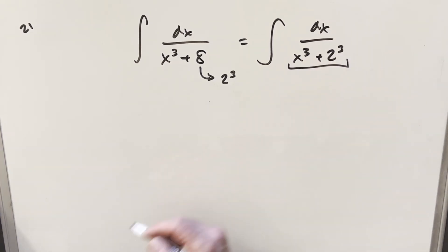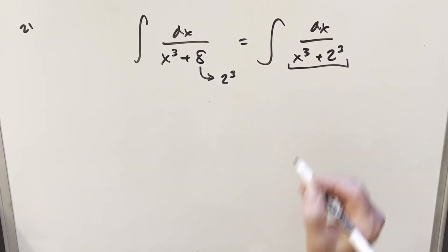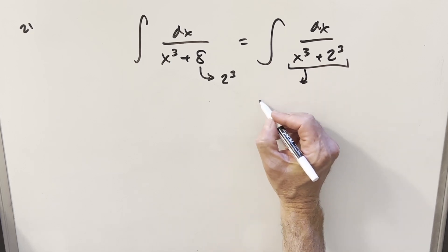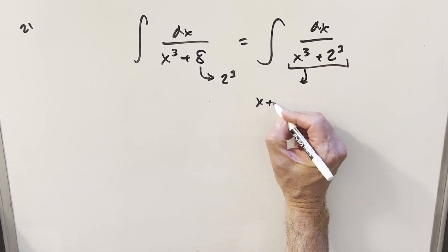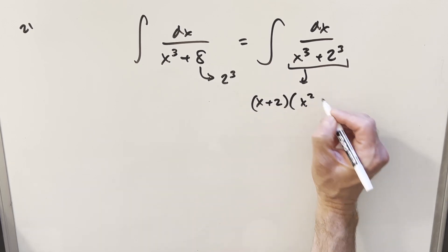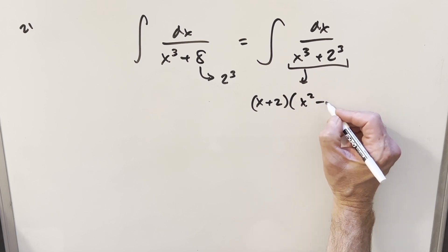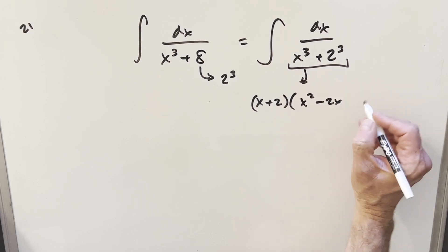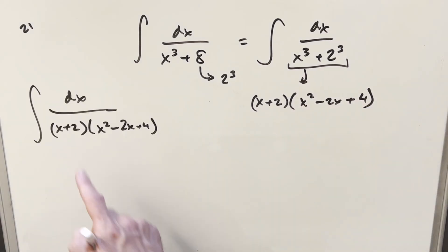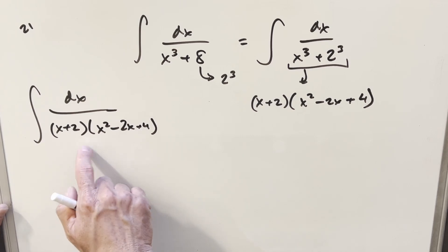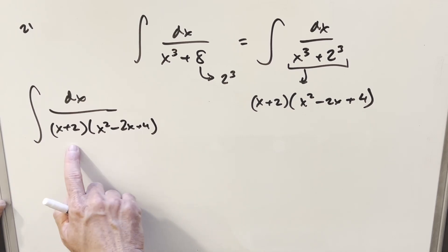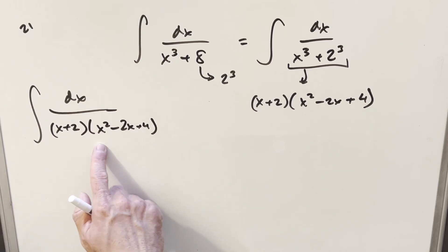Now what we have in the denominator is the sum of two cubes. There's a nice factorization for this: we can write this as x plus 2 times x squared minus 2x plus 4. Now that we have it in this form, we're set up nicely for partial fractions — we're going to split this into two fractions.